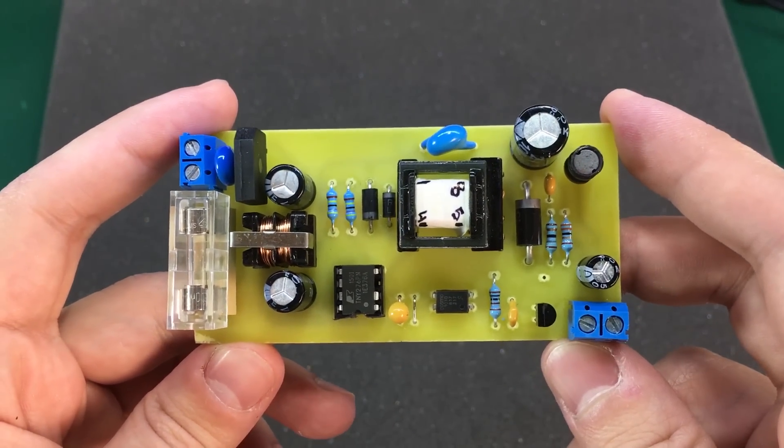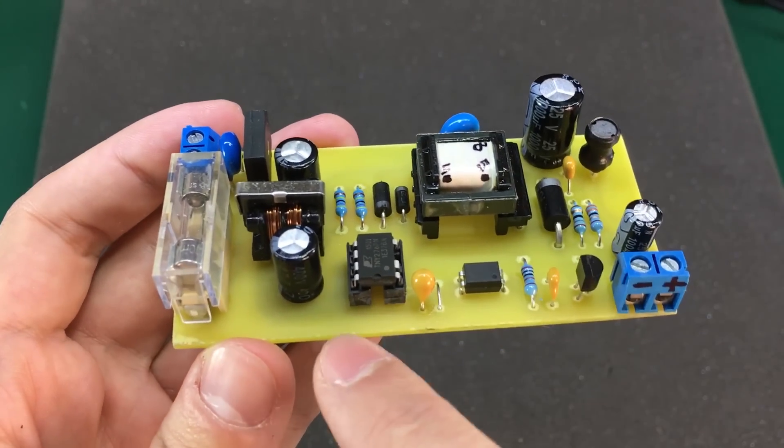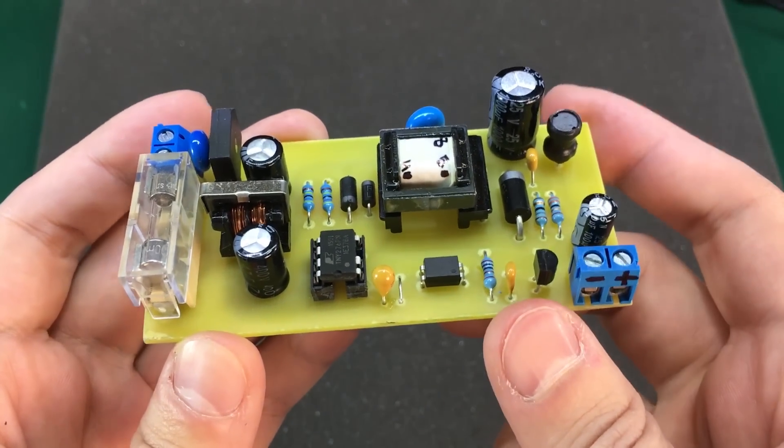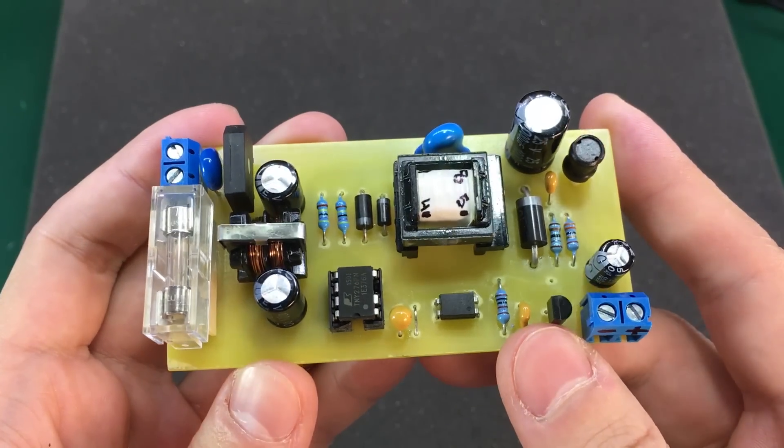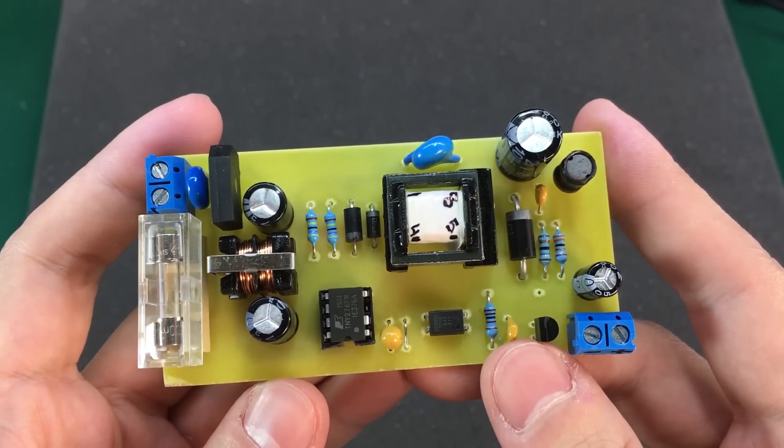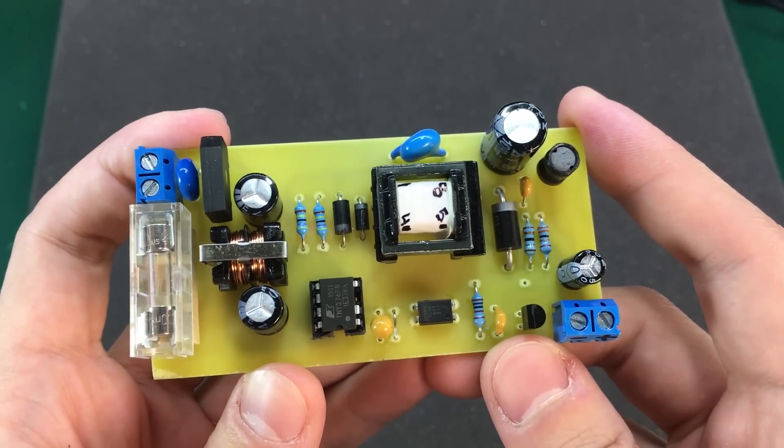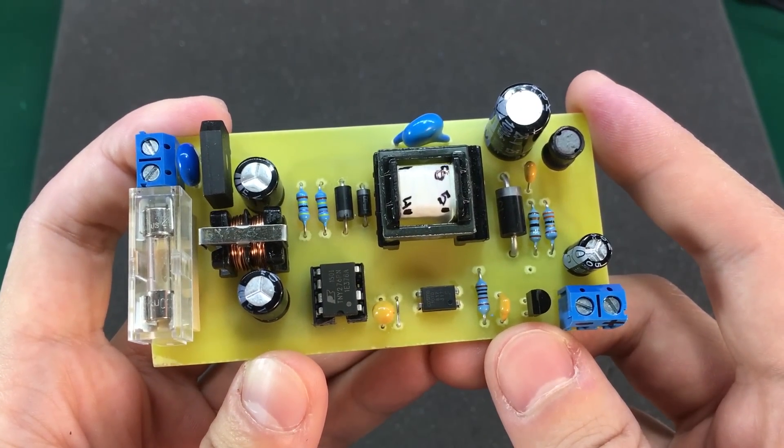So I decided to investigate this further and soldered a socket on the PCB so that I could easily swap the chips. I took a new TNY-276, installed it on the PCB and to my surprise the circuit was working just fine, same as with the TNY-277 chip.